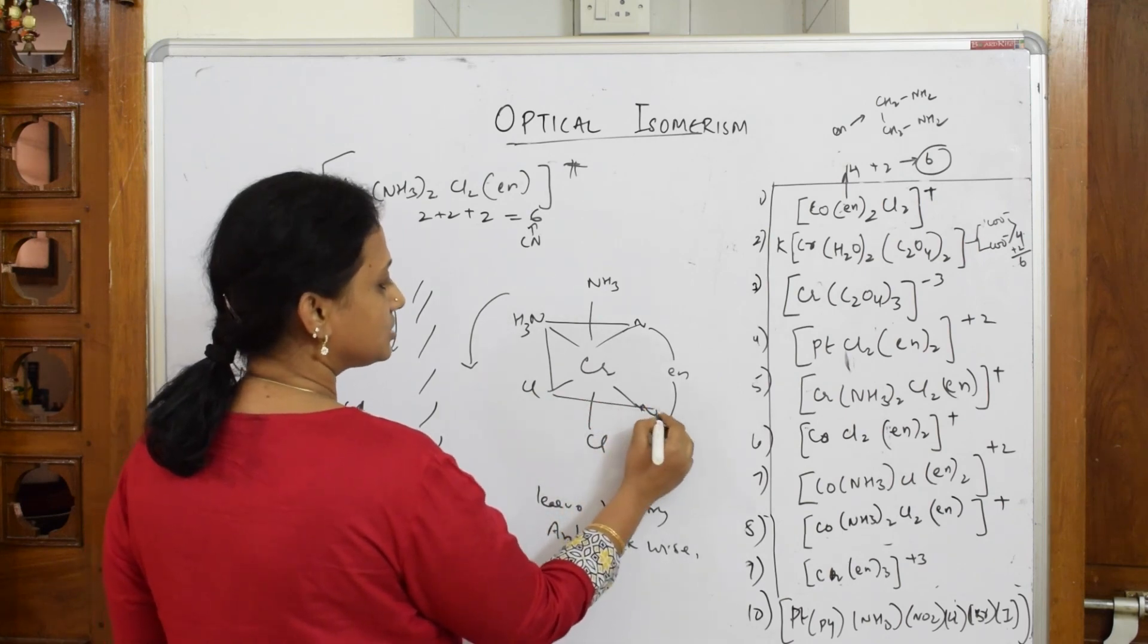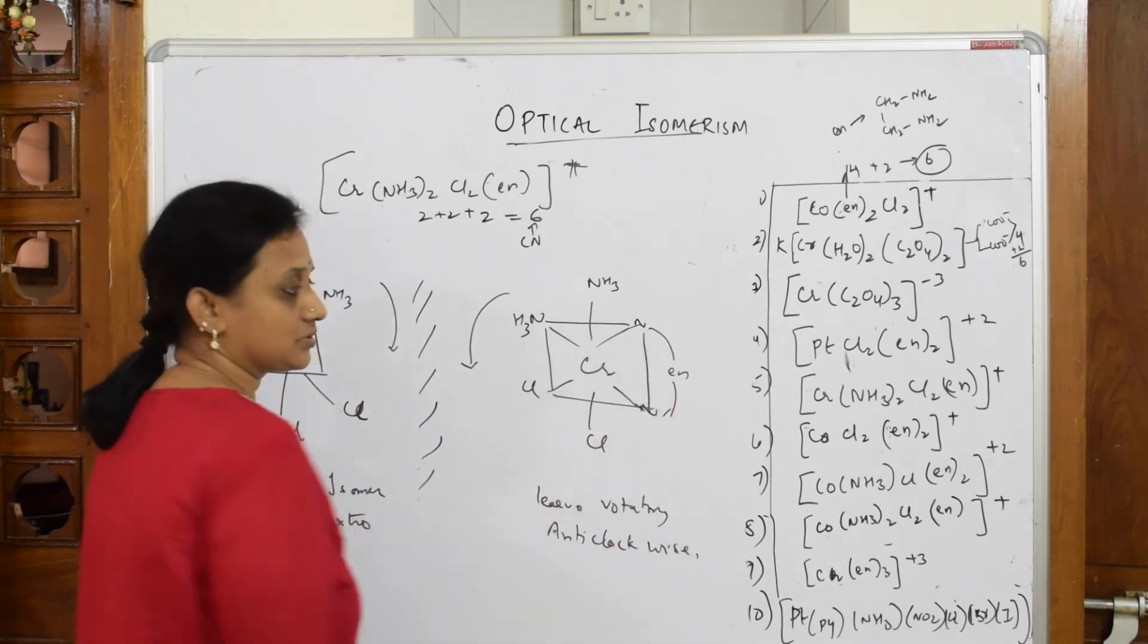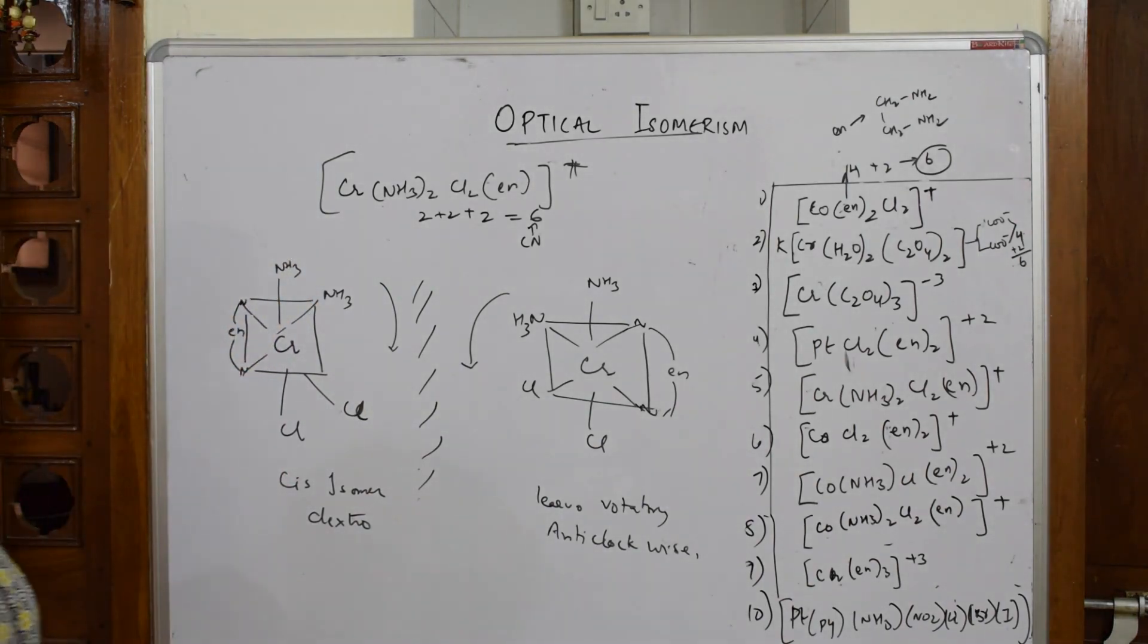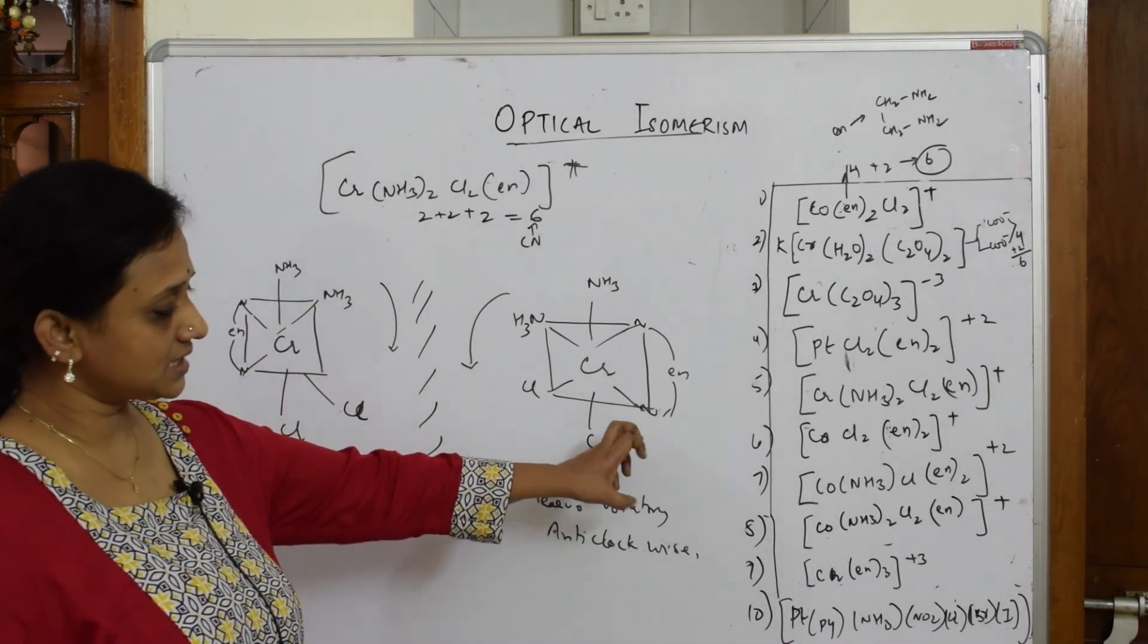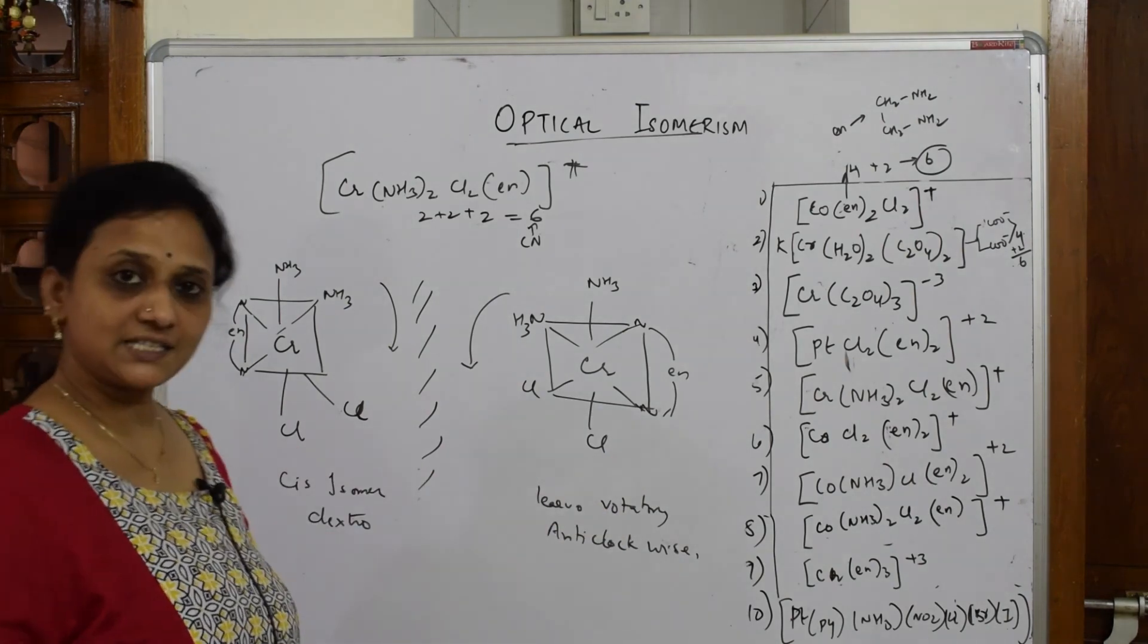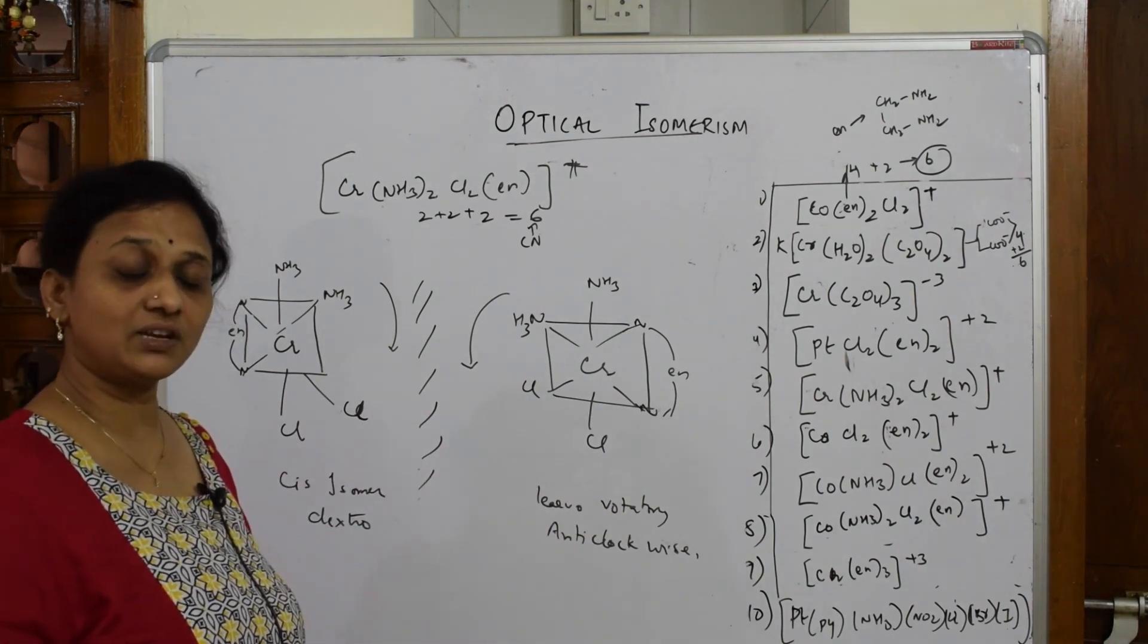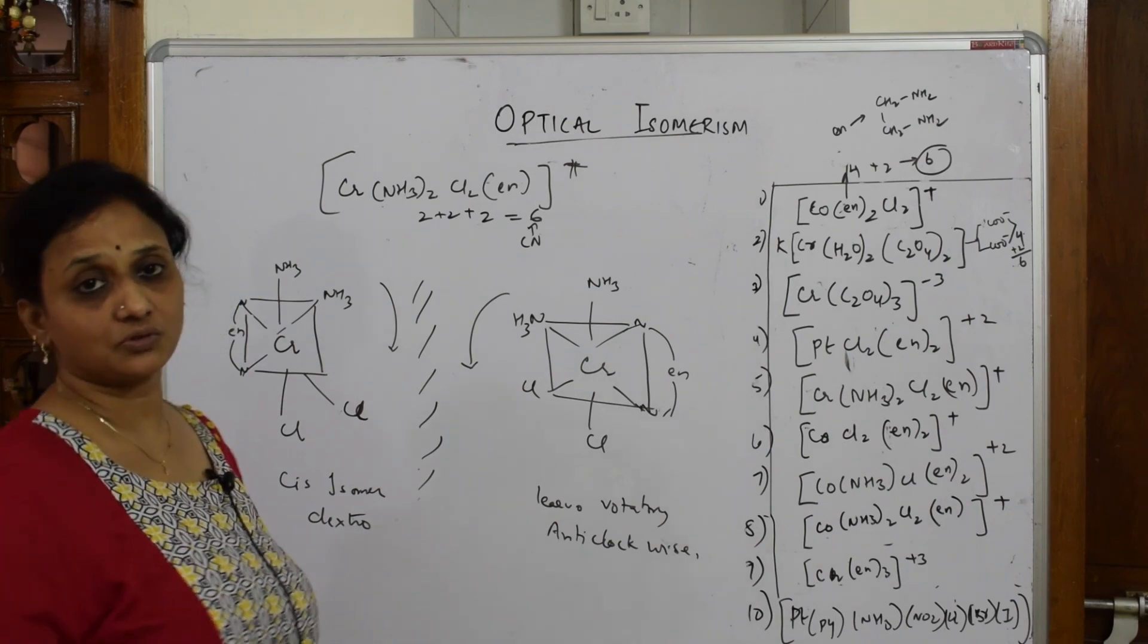We have learned till five now. Let's come back and learn six, seven, eight, and sets. An important thing here: we will see whether it's going to show geometrical isomerism or not.